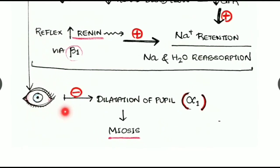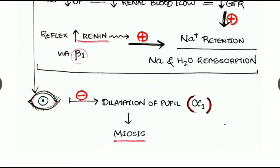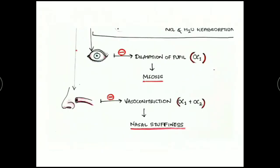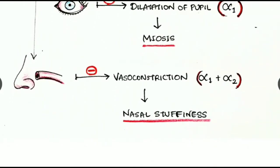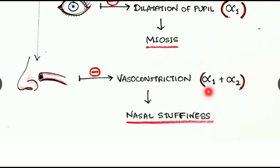Alpha receptors are also found in the eyes. By inhibiting these alpha receptors — more especially alpha-1 — it inhibits pupil dilation, causing miosis, that is constriction of the pupil. Alpha receptors are also found in the blood vessels of the nasal cavity; inhibiting them causes inhibition of vasoconstriction, acting on both alpha-1 and alpha-2 receptors.